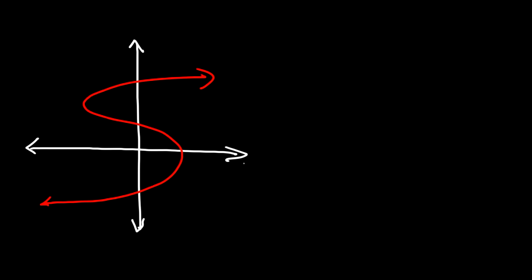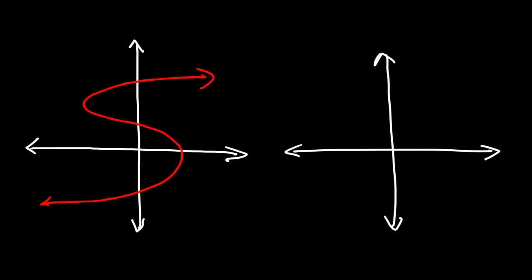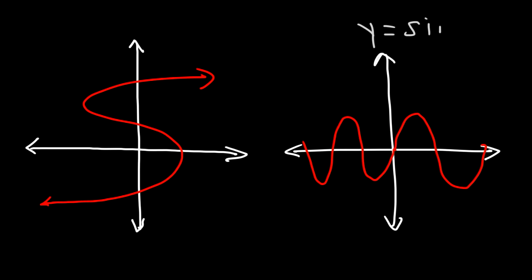Here are two more examples to try. On the right, this is the graph for sin x. Looking at the first graph, we can clearly see that it does not pass the vertical line test — it touches at least three points for that particular vertical line. The sine function, however, is a function and it passes the vertical line test.